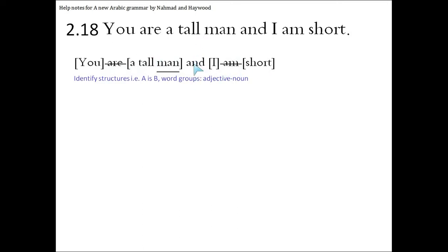So we effectively have two sentences divided by 'and'. The first sentence is an A is B sentence: the A is 'you' and the B is 'a tall man'. The second sentence is 'I am short', again it's an A is B sentence: the A is 'I' and the B is 'short'. So let's concentrate on the first sentence.